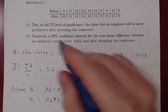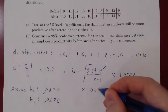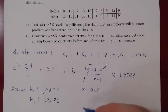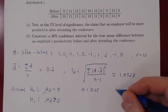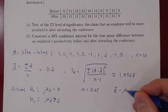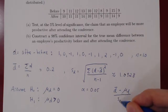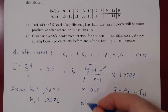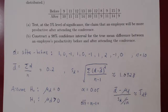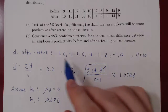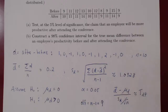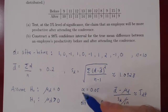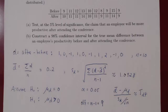We have a 5% level of significance, so α = 0.05. Our test statistic is the sample mean difference minus the true mean difference, over the sample standard deviation divided by the square root of n. We know this follows approximately a t-distribution. The degrees of freedom are n minus 1; since we have 10 differences, that is 9. With our statistic and significance level, we can now construct our rejection region.